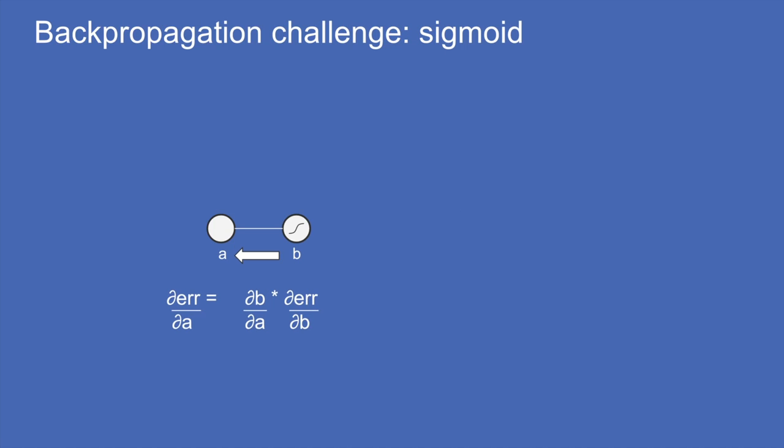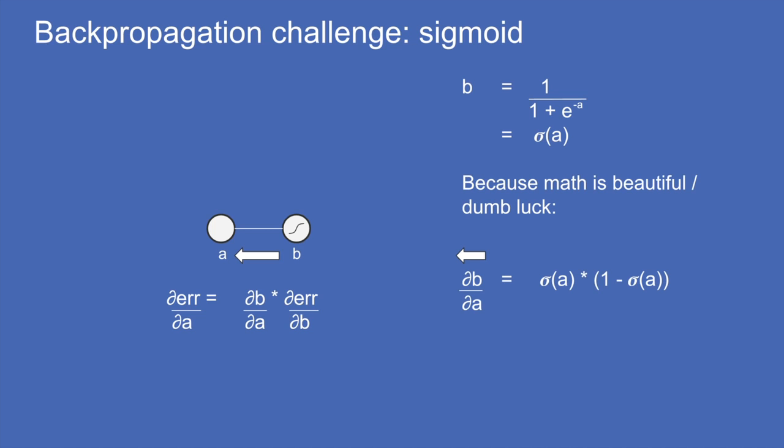Another element we need to back-propagate through is the sigmoid function. Writing it shorthand as σ, it is entirely feasible to take the derivative analytically. It just so happens this function has a nice property: to get its derivative, you just multiply it by one minus itself — very straightforward to calculate.